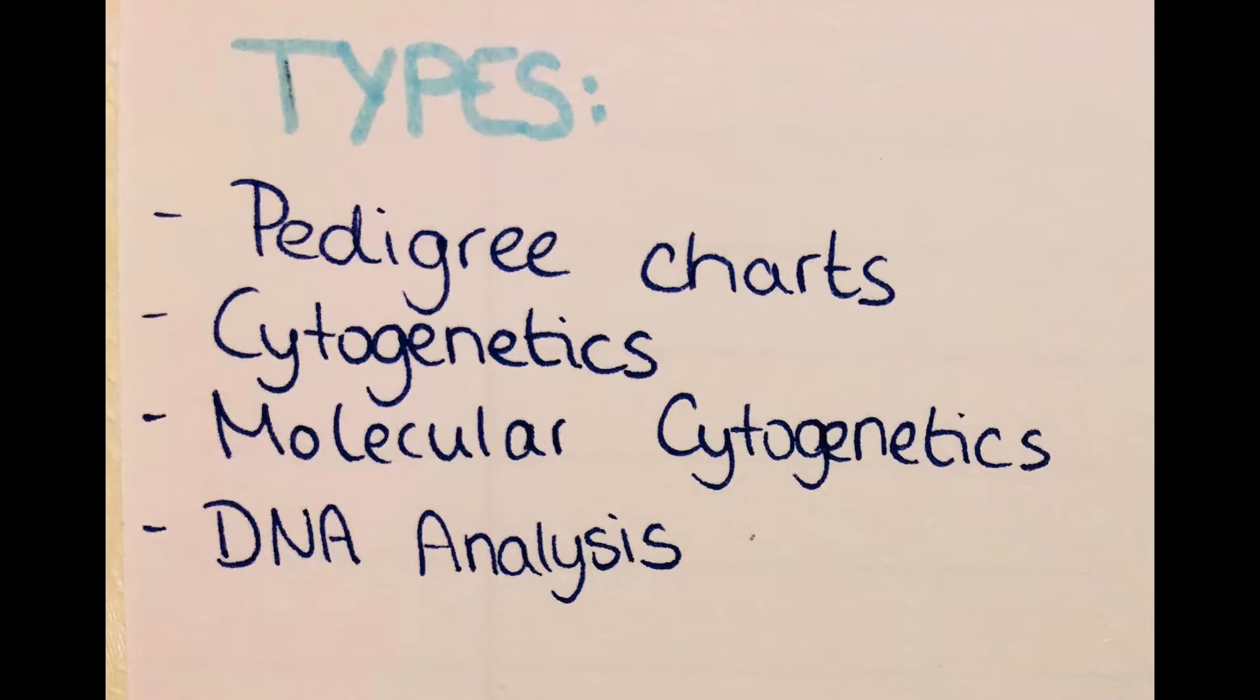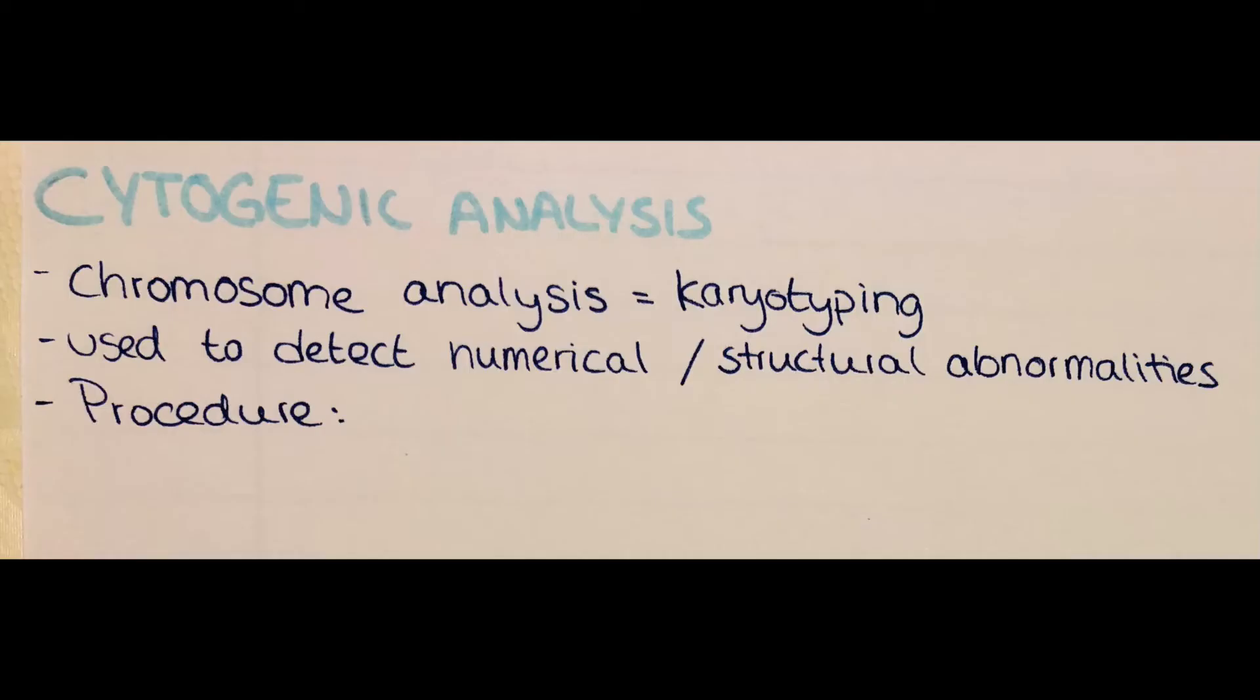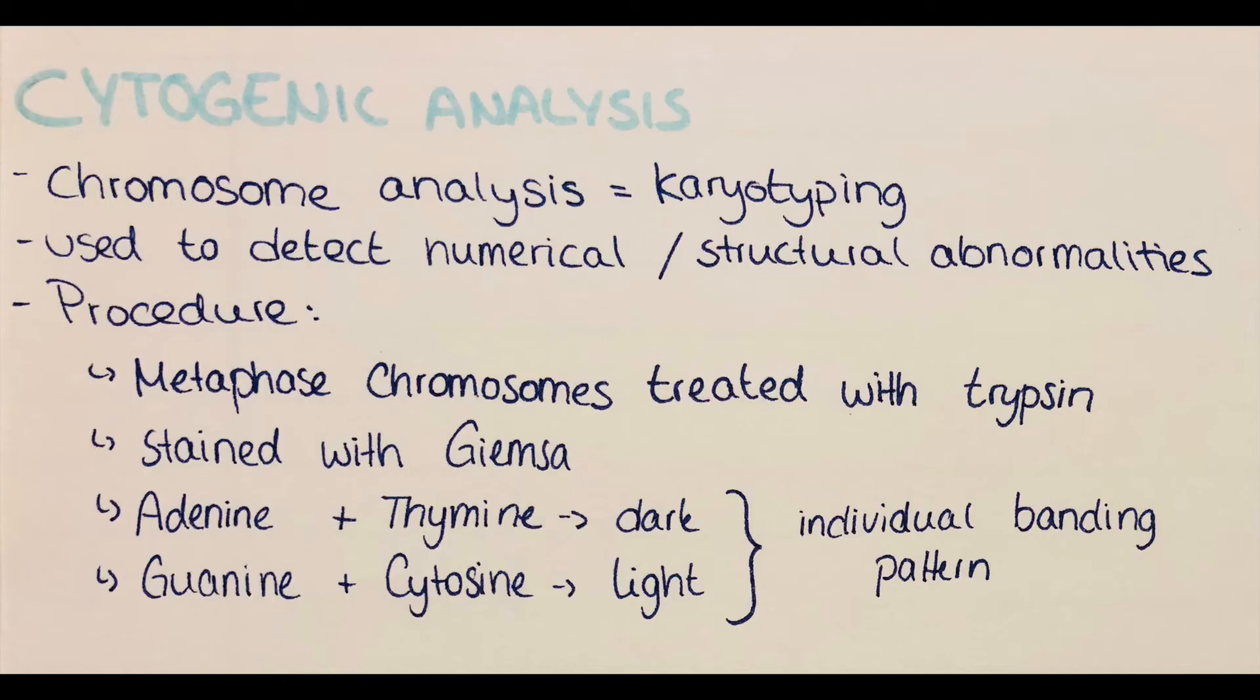The next method is cytogenetics, and one of the most frequently used techniques in cytogenetic testing is the G-banding technique. Here metaphase chromosomes are treated with trypsin to partially digest them, and then the chromosomes are stained with a Giemsa stain.